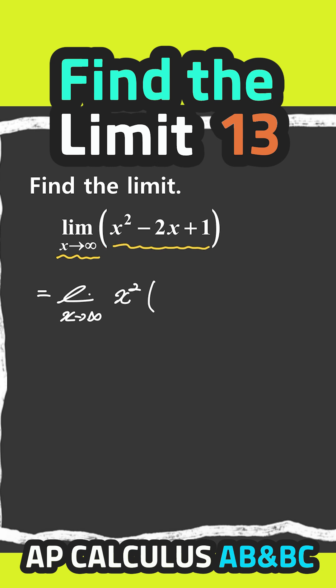Then we have parentheses 1 minus, since we factor out x squared, this is going to be equal to 2 over x plus this is 1 over x squared, right?